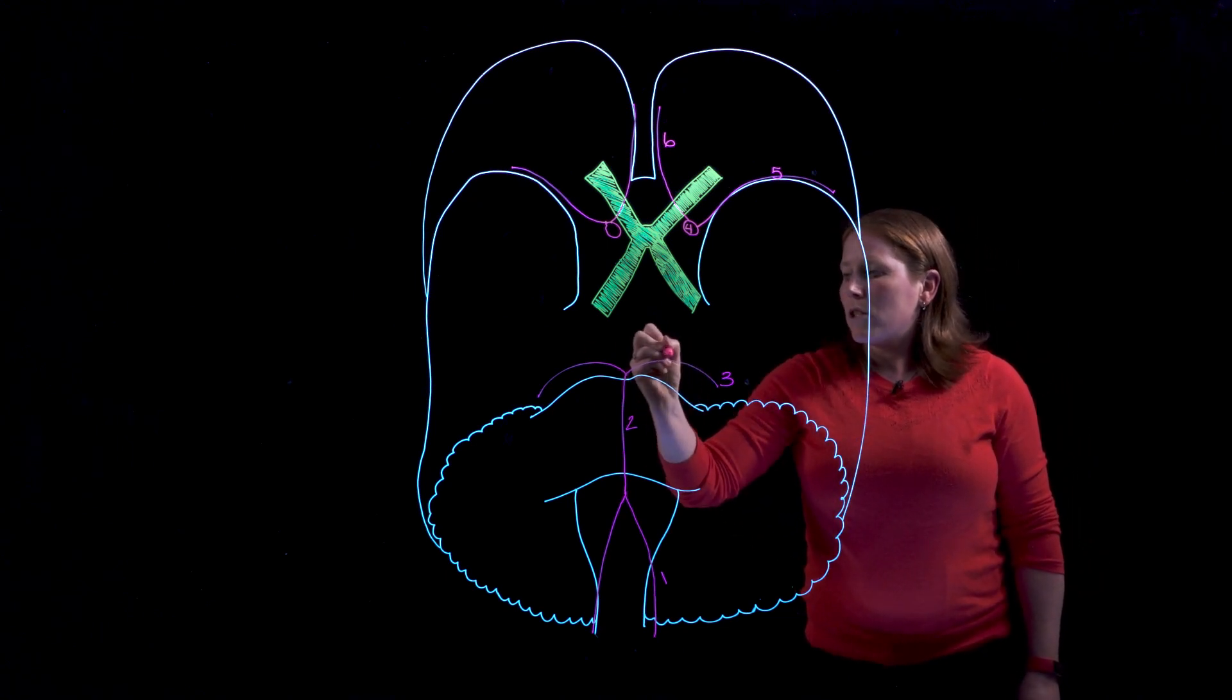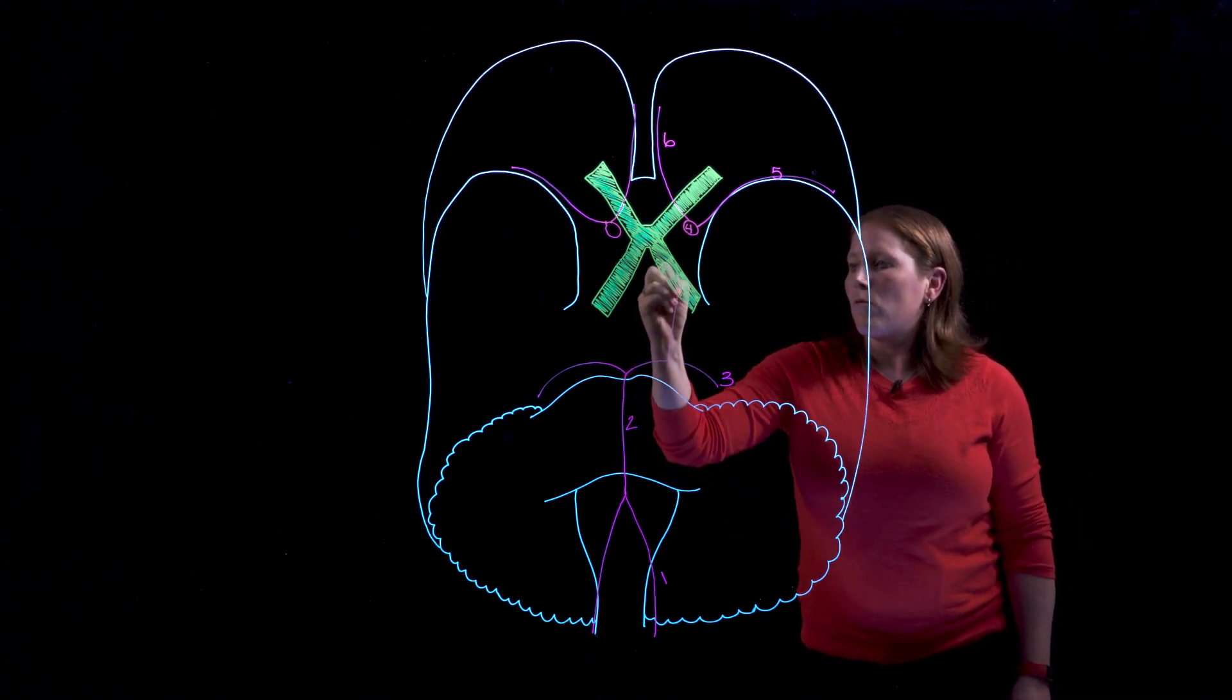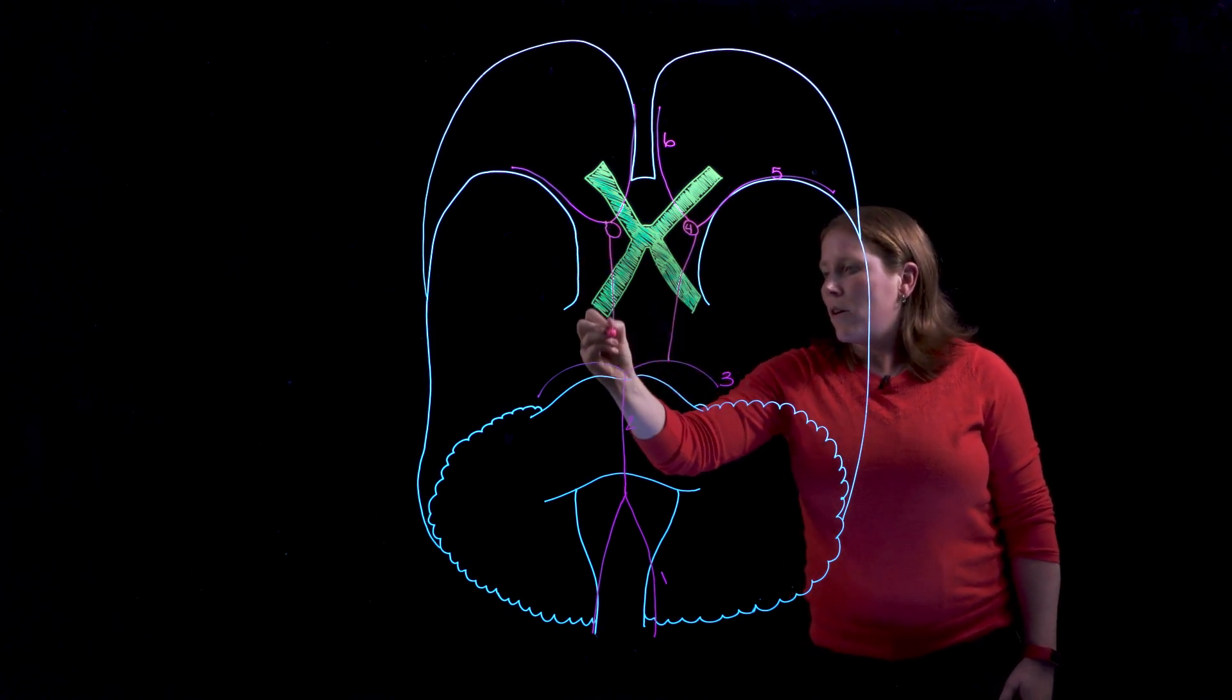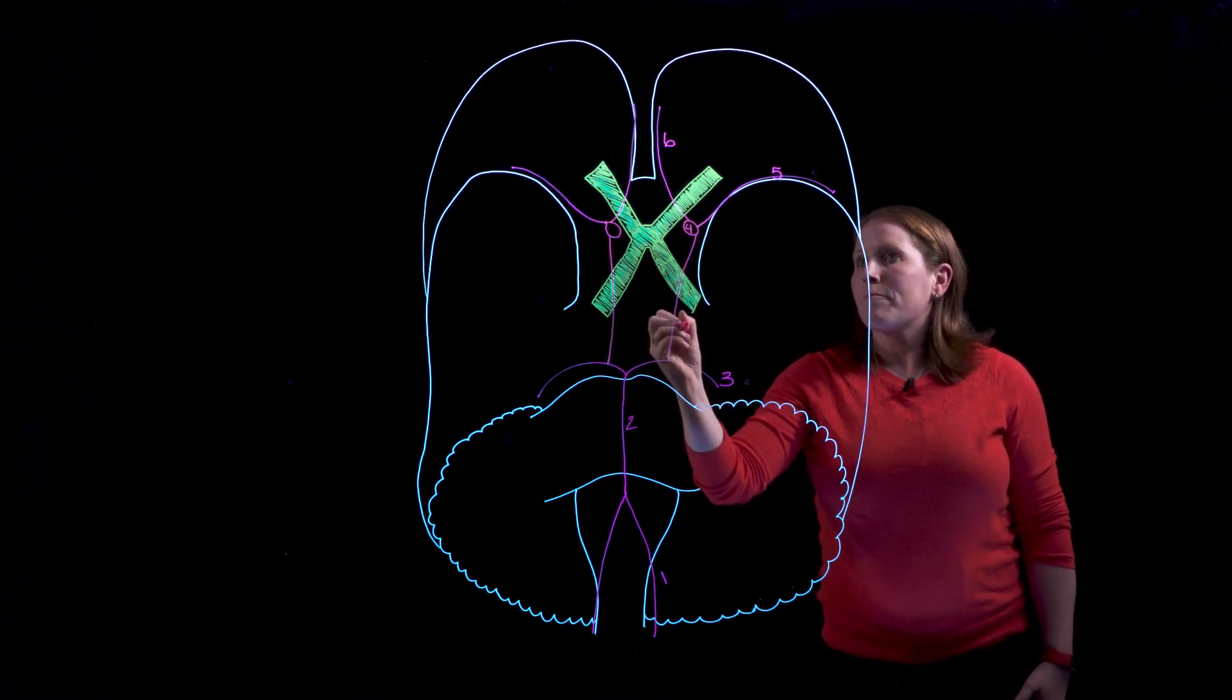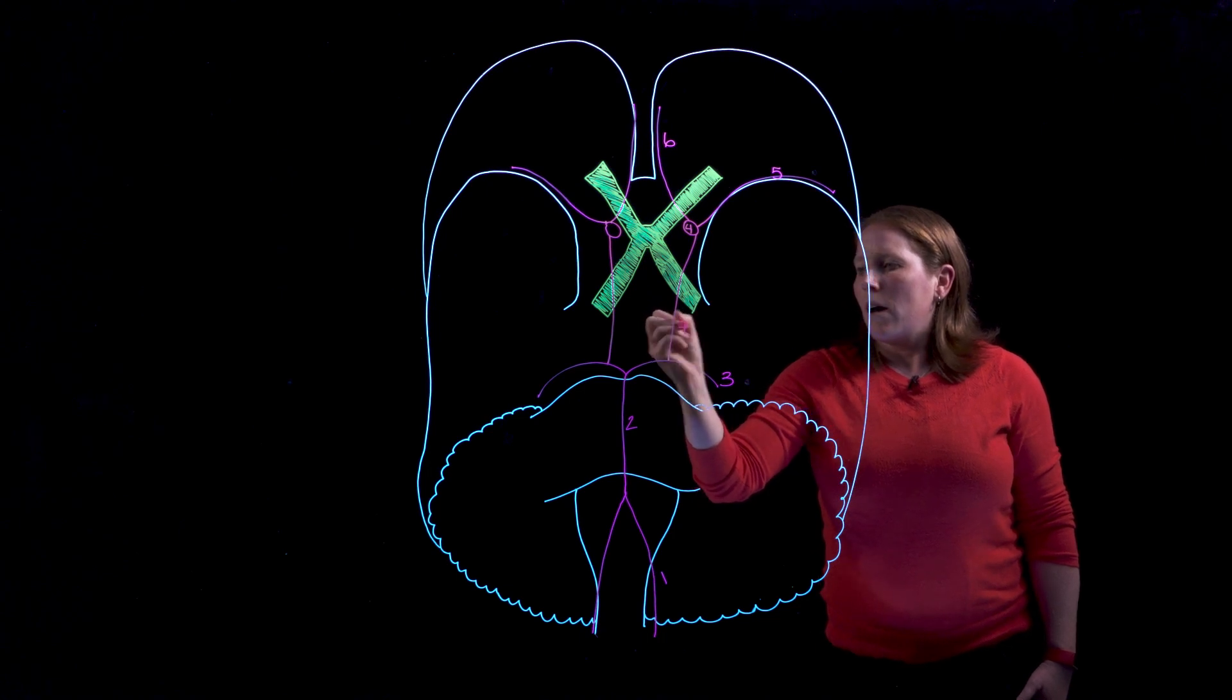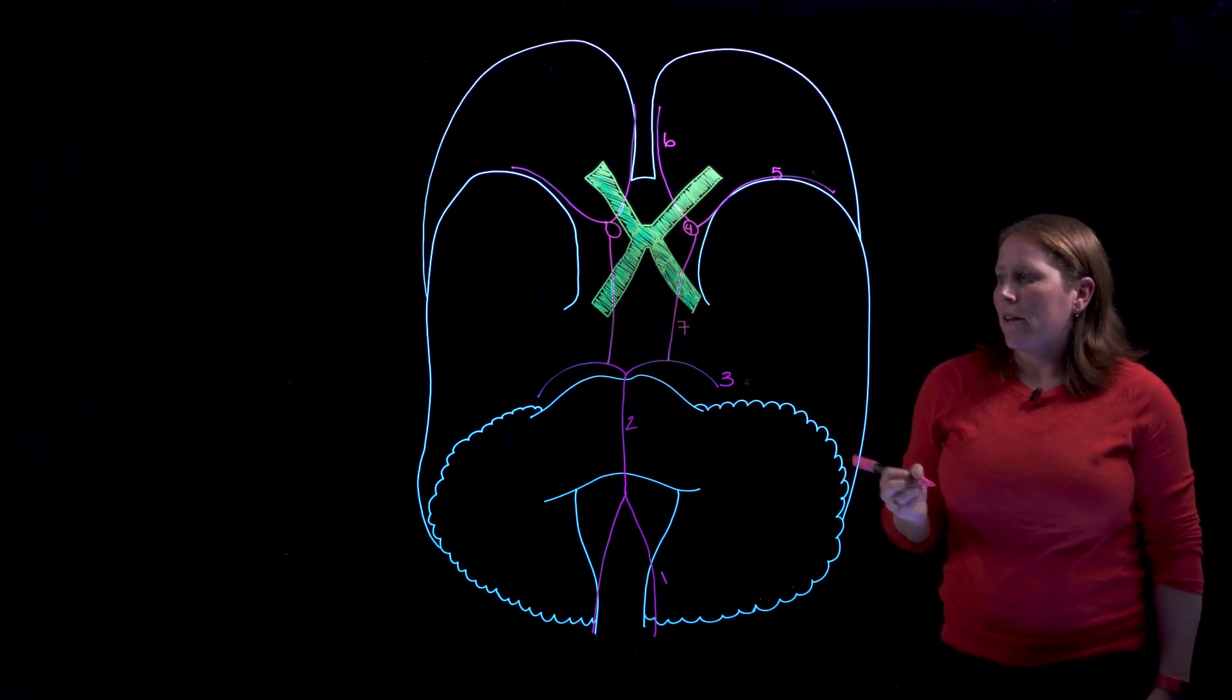From each of the posterior cerebrals right up to the internal carotid we have our posterior communicating arteries and there's a pair of those a left and a right.